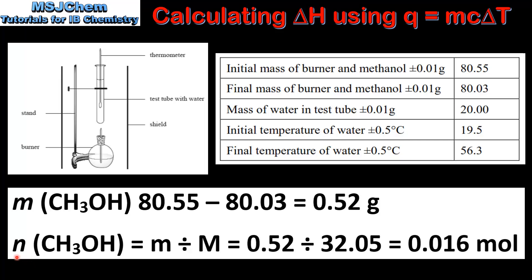We will use the equation: amount in moles N equals mass in grams divided by the molar mass. So that's 0.52 grams divided by the molar mass of methanol which is 32.05 grams per mole, which gives us 0.016 moles of methanol used in the reaction.